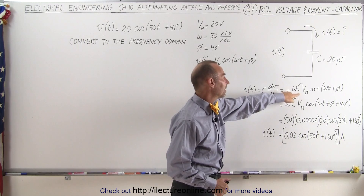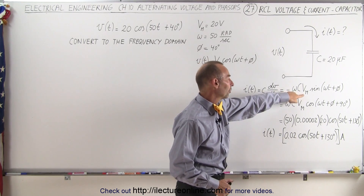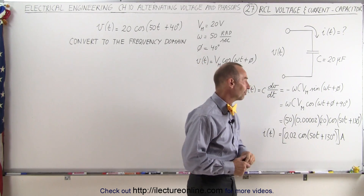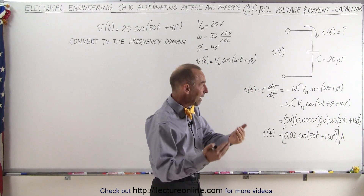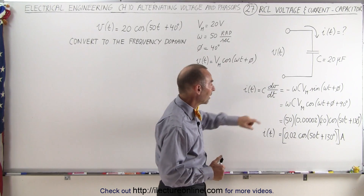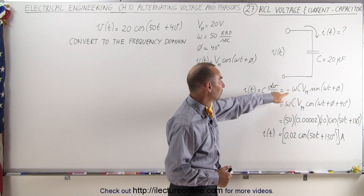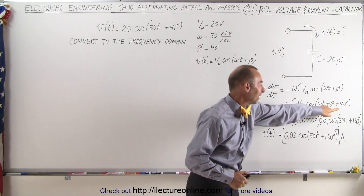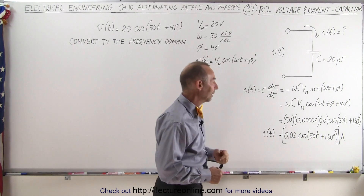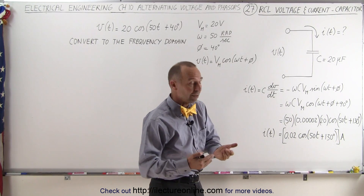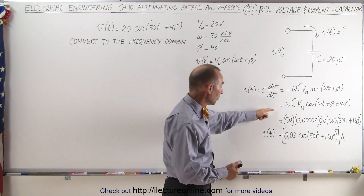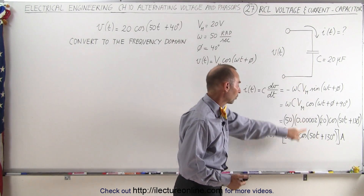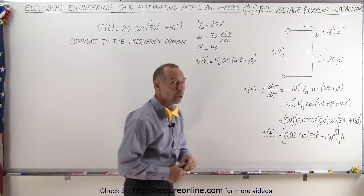We get minus omega·C times the maximum voltage times the sine of (omega·t plus phi), and then if we convert that back to the cosine, notice the negative drops off and we have to add a 90-degree phase angle. Then we can simply plug in the numbers and find the current in that circuit with respect to time.